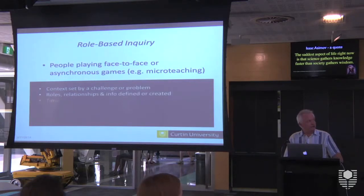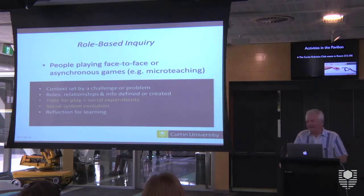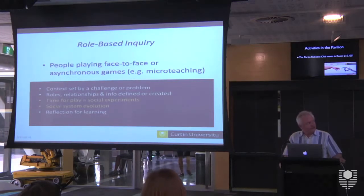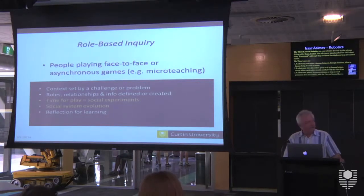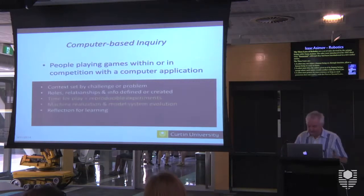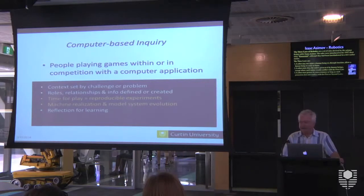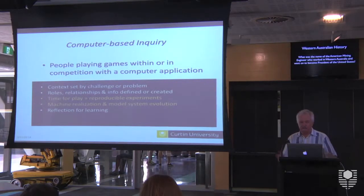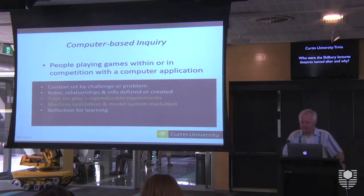Playing games is of course very old, and one of the ways you can do it is without a computer — just doing it through role-based play. When it's socially moderated, the time for play is a social experiment, and what you get from that are the things you would learn from a social system. When we have a computer in the mix, the time for play allows a different kind of relationship — reproducible experiments. You can rerun the same game many times and it'll always respond with pretty close to the same results if played the same way, allowing a more true experimental relationship to the game platform. This amounts to a machine realization and model system evolution.